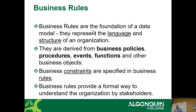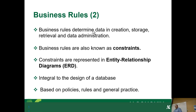Business rules are the foundation of a data model. They represent the language and structure of an organization. They have to do with policies, procedures, and business constraints. Business rules provide a formal way to understand the organization by all stakeholders involved. The business rules will determine the data used in creation, storage, retrieval, and administration — they're usually known as constraints. Constraints are usually seen in the ERD when you draw the crow's foot notation showing one-to-many, many-to-many, required, not required.